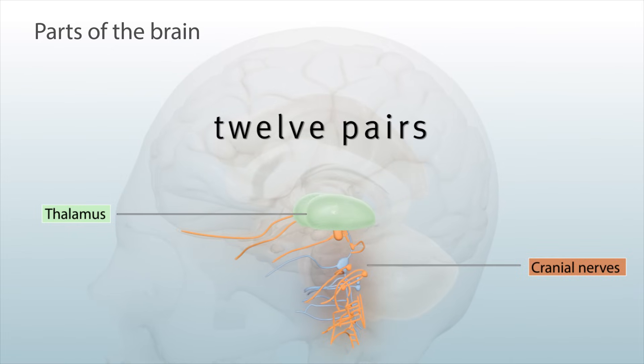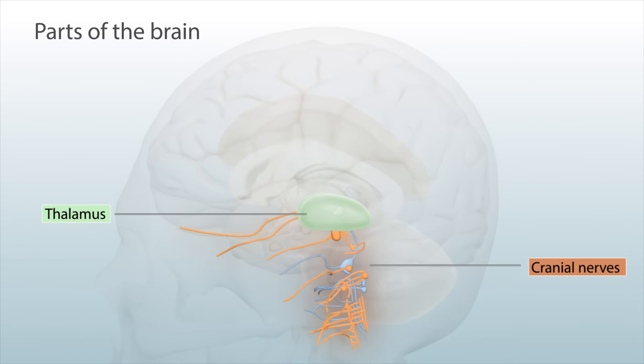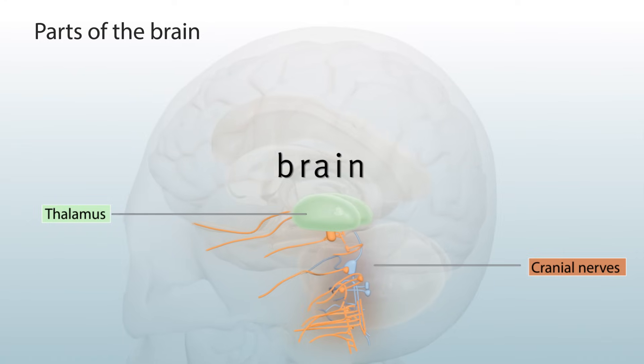Twelve pairs of cranial nerves carry information from your senses to and from the brain and body.